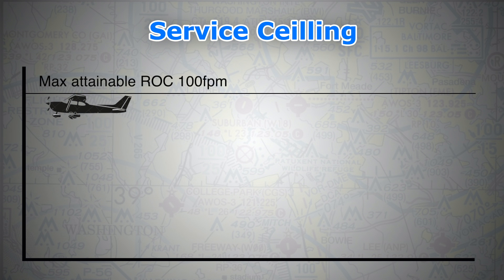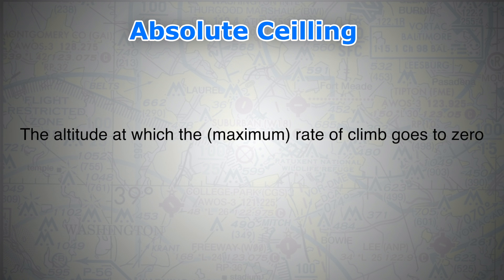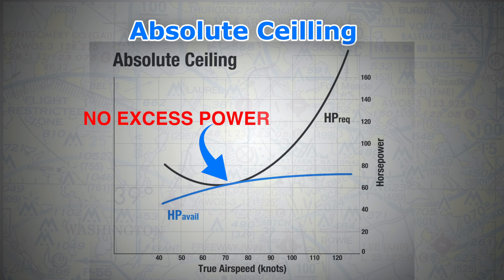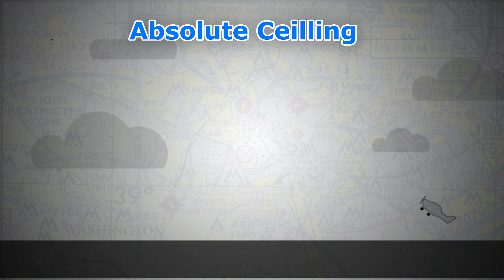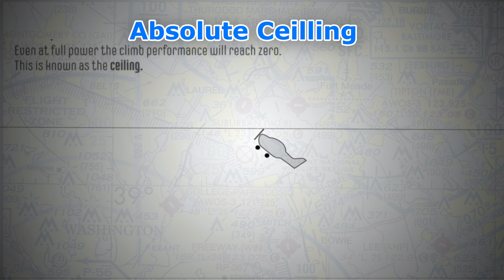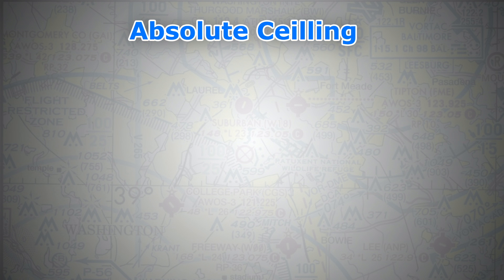This altitude at which this occurs is called the service ceiling. Now let's talk about the absolute ceiling. By definition, it is the altitude at which the maximum rate of climb goes to zero. It is due to the exact same reason we discussed earlier — at the absolute ceiling, the airplane can only maintain level flight and can no longer achieve climb performance, even with full power, as there is no longer any excess power left.